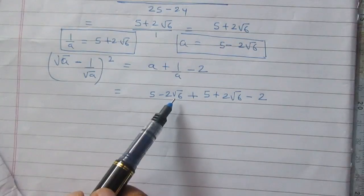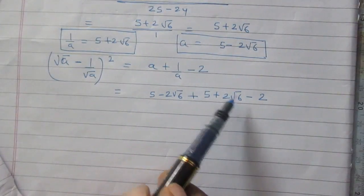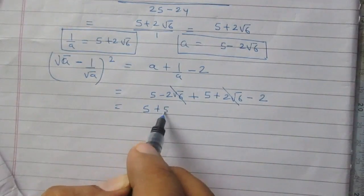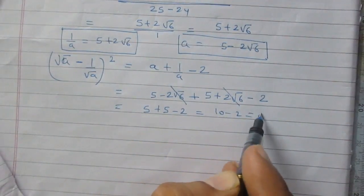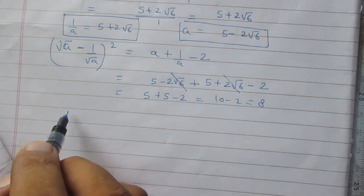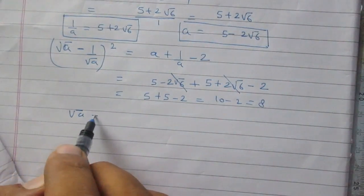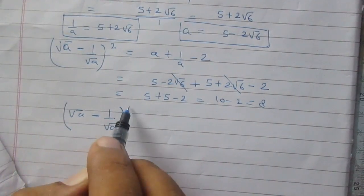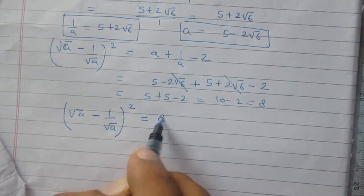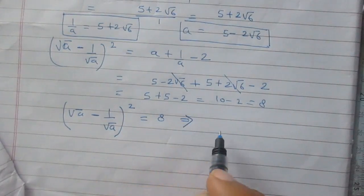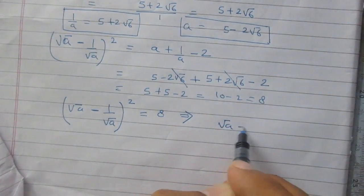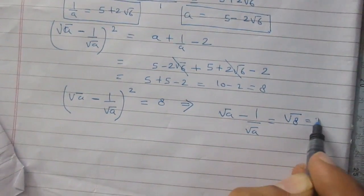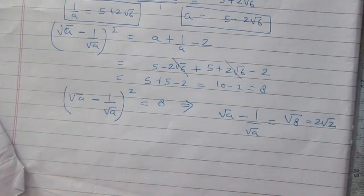Here, minus 2 times square root 6 and plus 2 times square root 6 cancel out to give 0. So we have 5 plus 5 minus 2, which is 10 minus 2, equal to 8. This means square root a minus 1 upon square root a, whole squared, equals 8. Therefore, square root a minus 1 upon square root a equals square root of 8, which is 2 times square root 2.